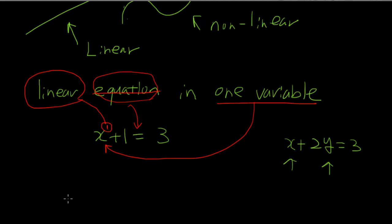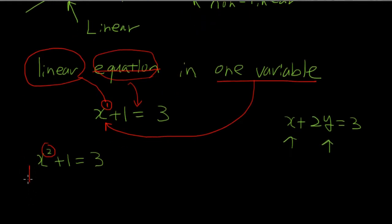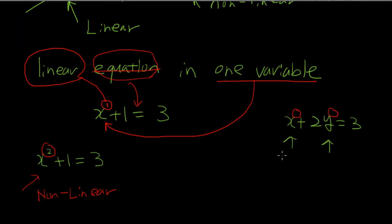There's no exponent written, which means there's a hidden 1. For example, if we have x squared plus 1 equal 3, the exponent is 2, not 1, and that makes this equation a nonlinear case. Similarly, for x plus 2y equals 3, both variables have exponent 1, so this would be a linear equation in two variables.